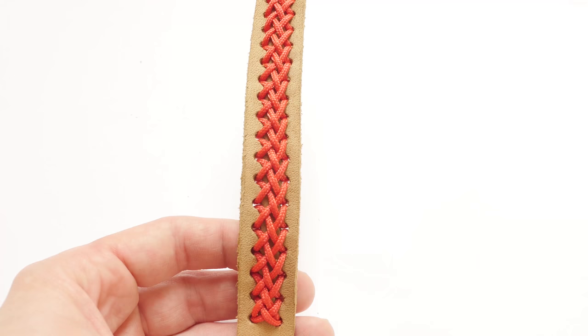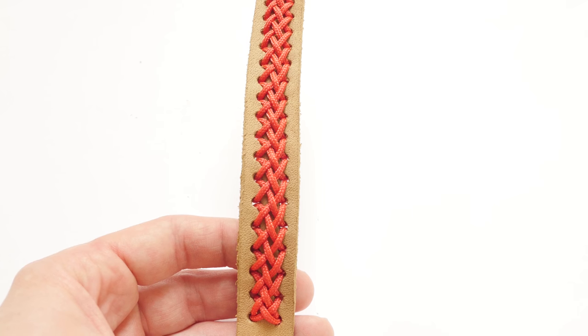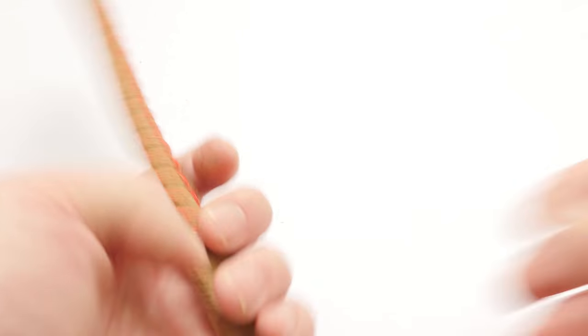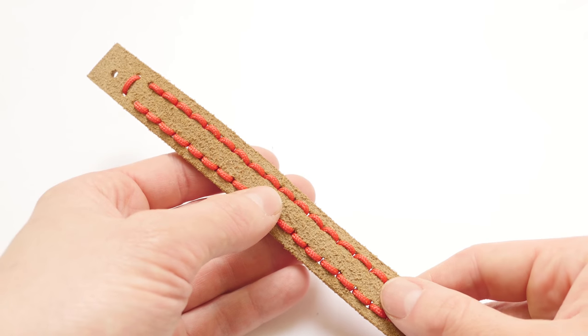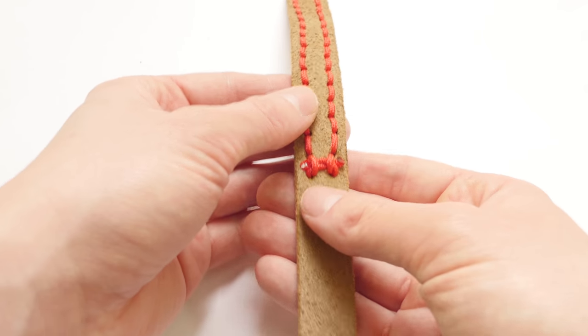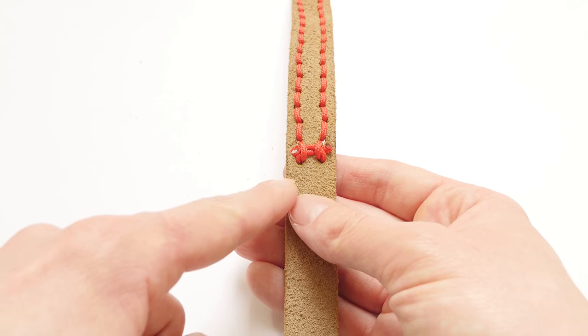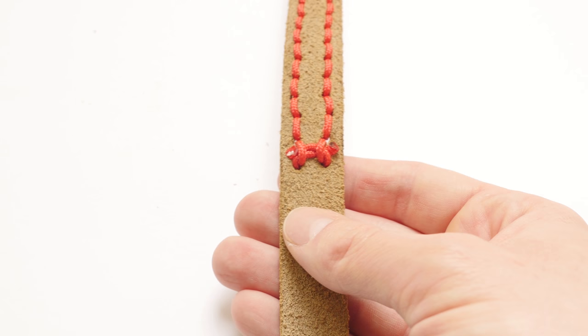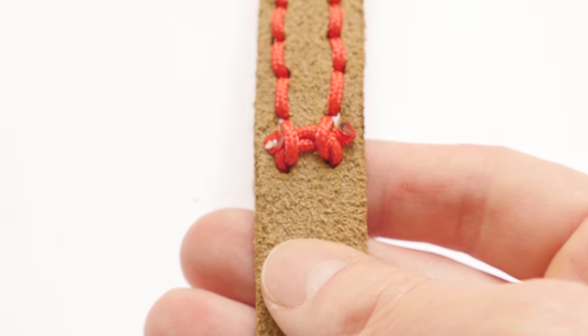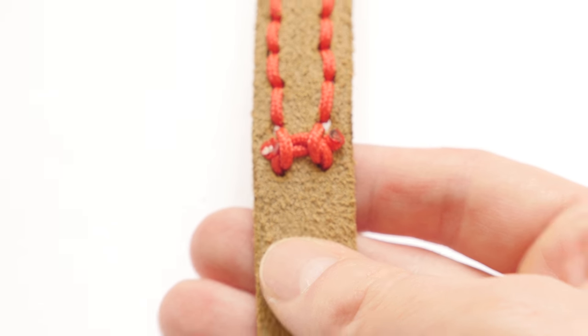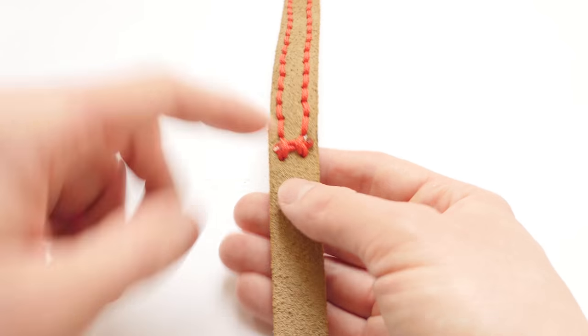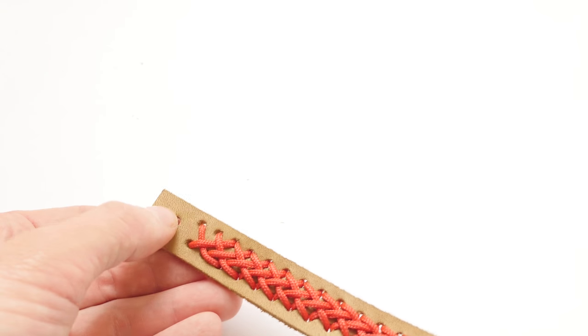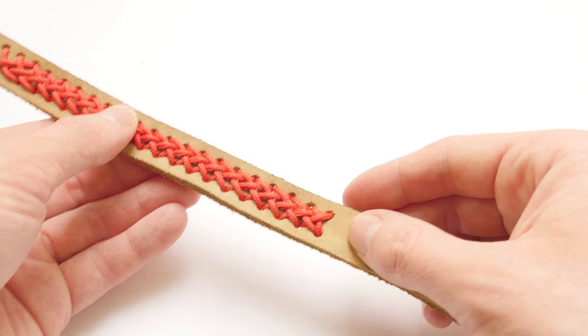I have finished my center braid now and it looks quite nice at the back as well. So we have two straight lines. And at the bottom I used a cut and melt method which works quite well. Now what we need to do is punch in another hole on this side to add in the snap.